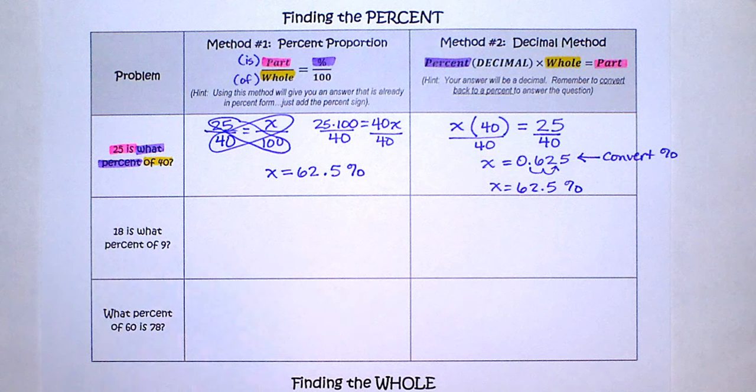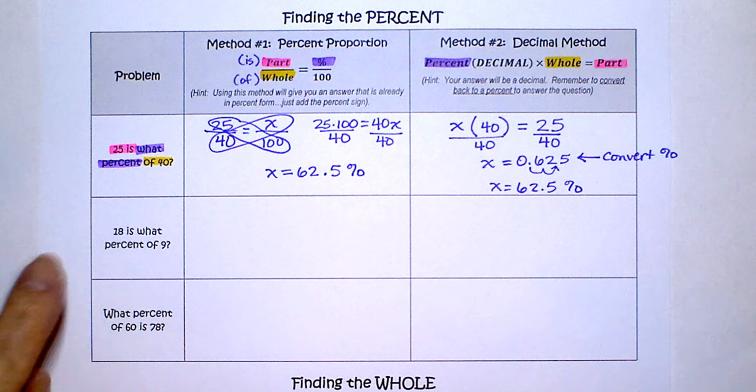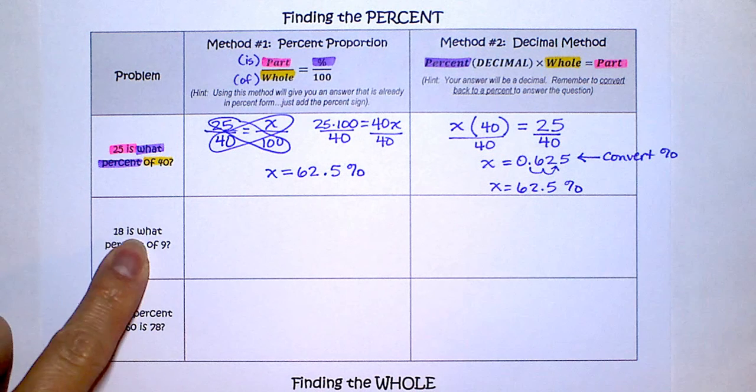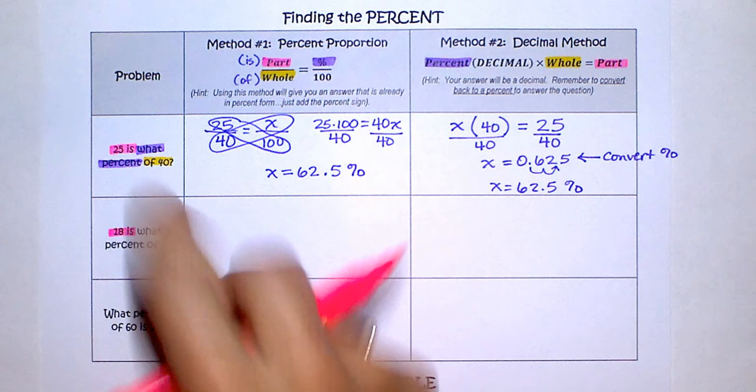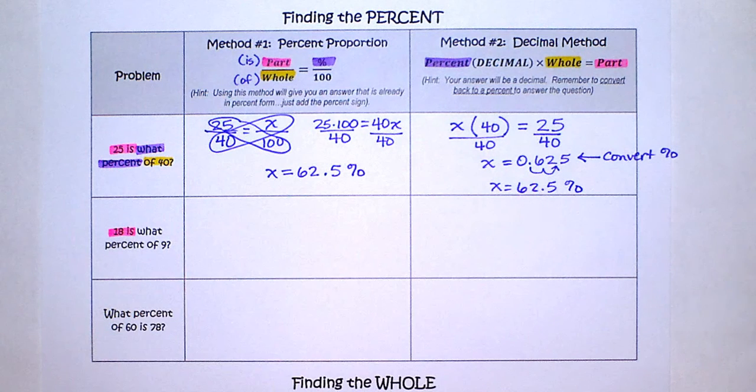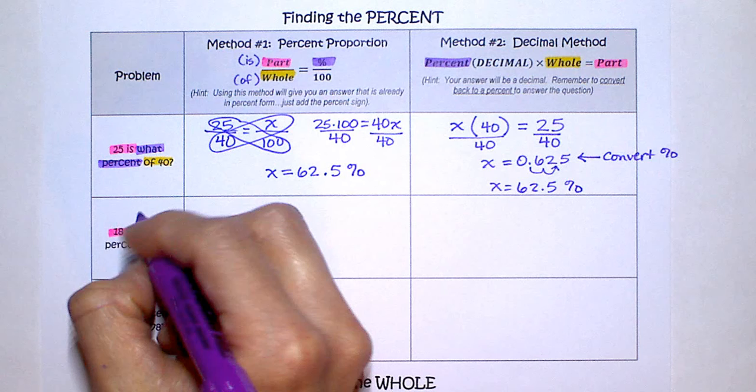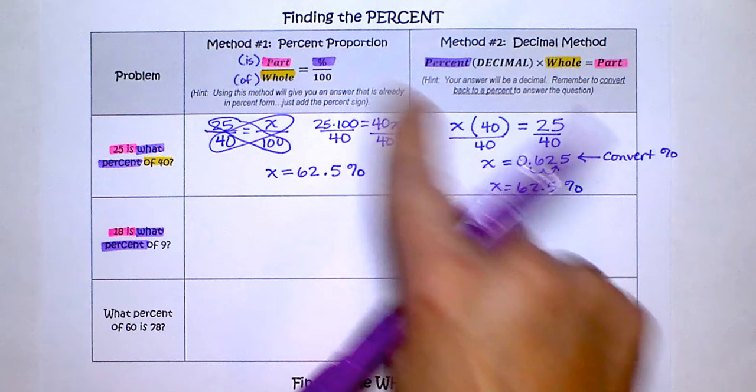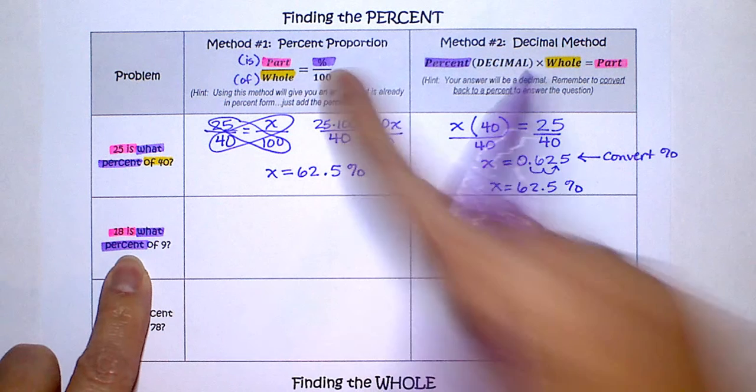Now let's try the next problem for finding the percent. We have 18 is, so I'm going to highlight that pink because that's the is, that's the part. What percent? I'm going to highlight that purple because that's the percent of 9.